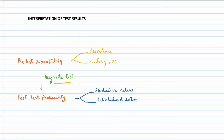There are two methods of calculating post-test probability. The first method is by predictive values, for which we need sensitivity and specificity of the test and prevalence of disease. The other method of calculation of post-test probability is by likelihood ratios, for which we need sensitivity and specificity of the test only.